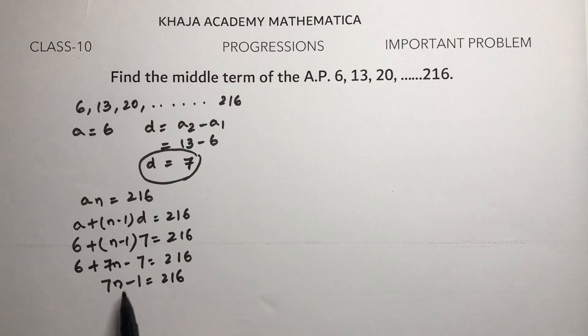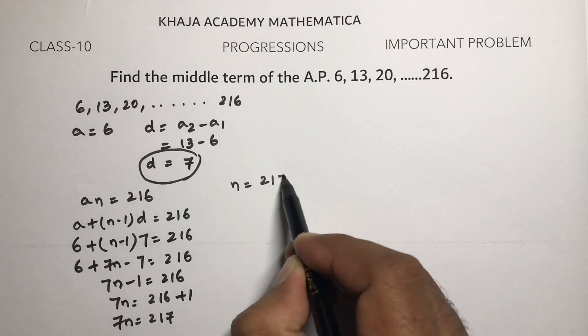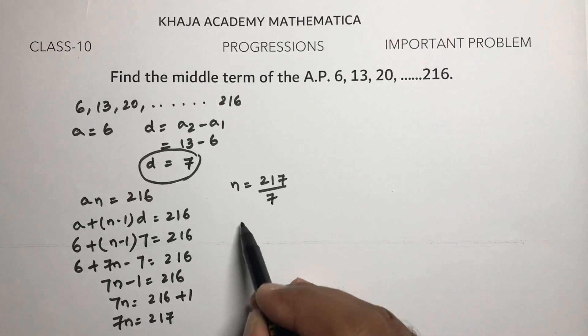Therefore 7n = 216 + 1, so 7n = 217. Thus n = 217/7.